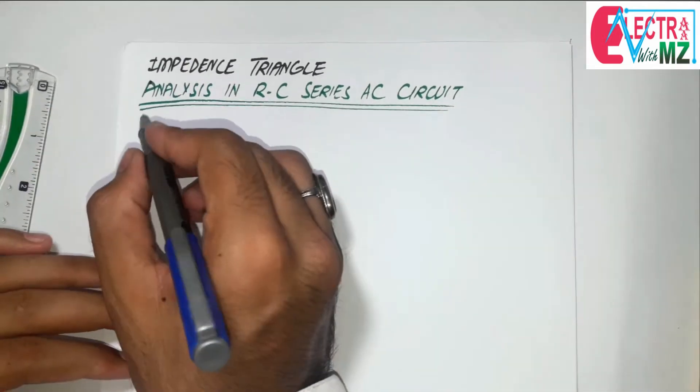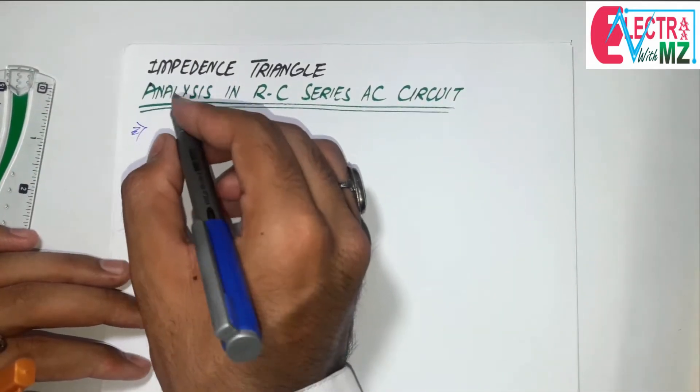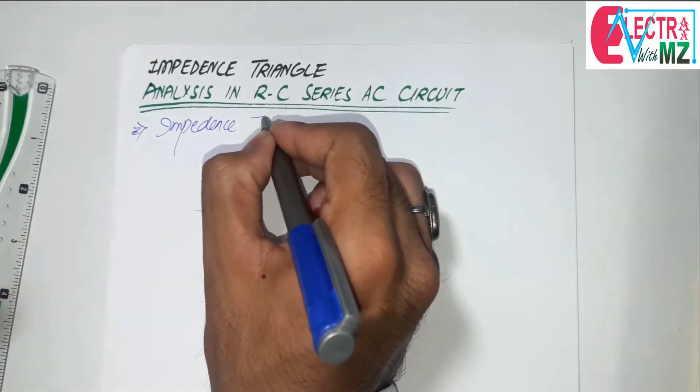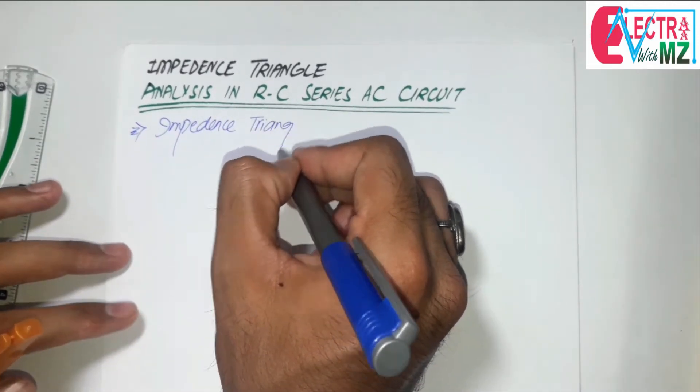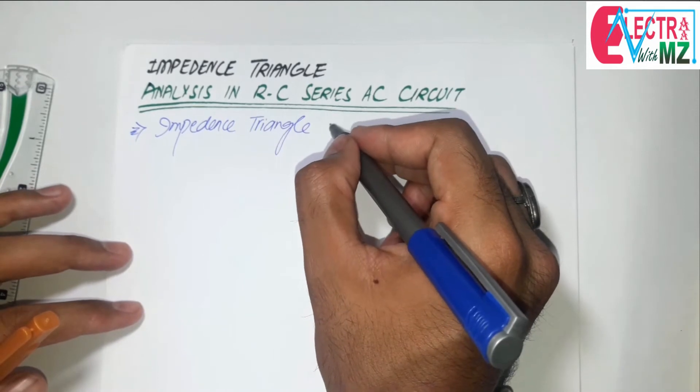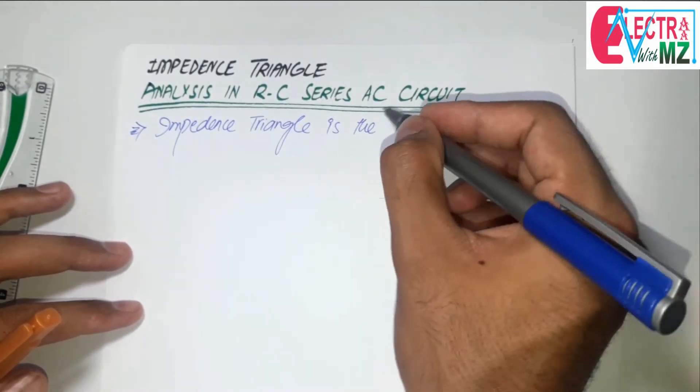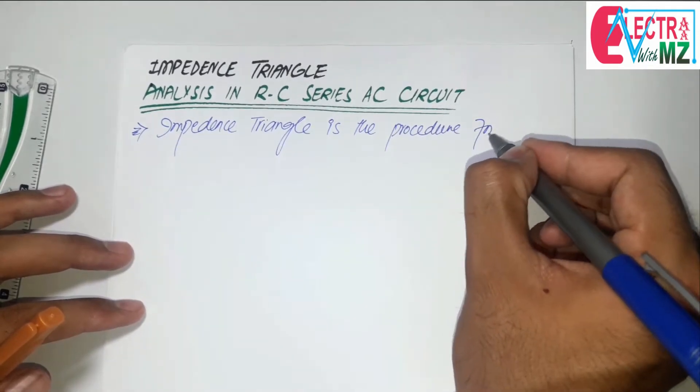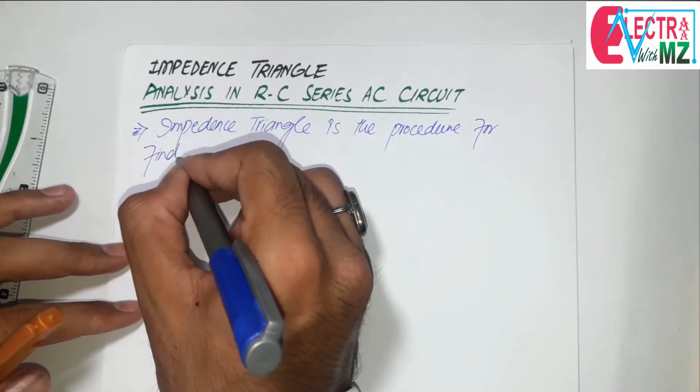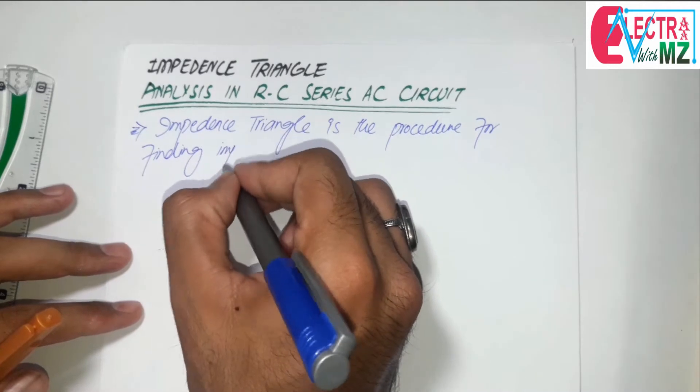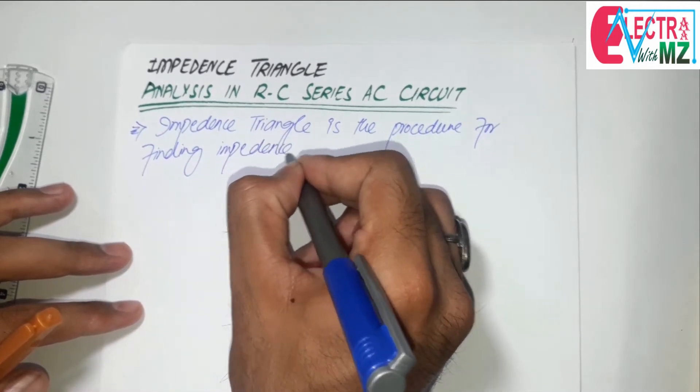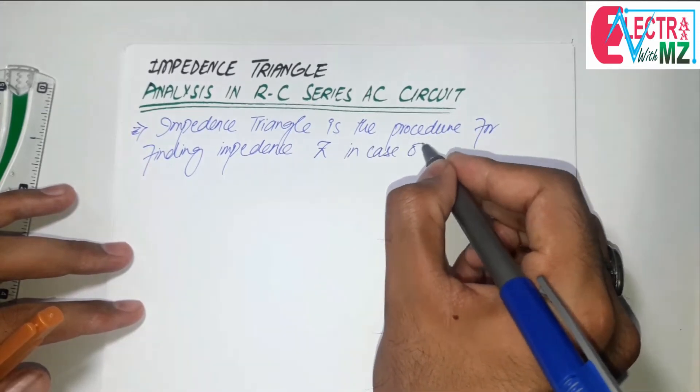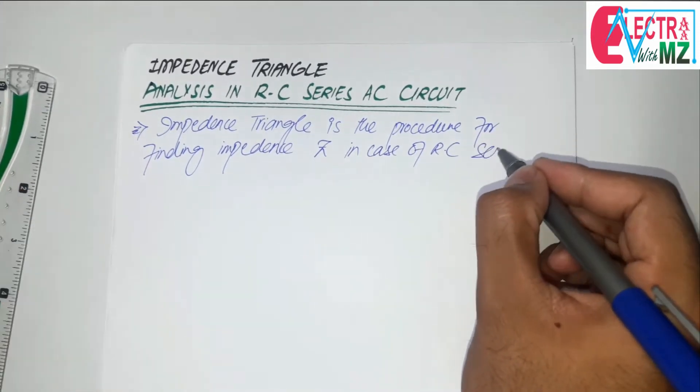So let's start impedance triangle. Impedance triangle is the procedure for finding impedance Z in case of RC series AC circuit.